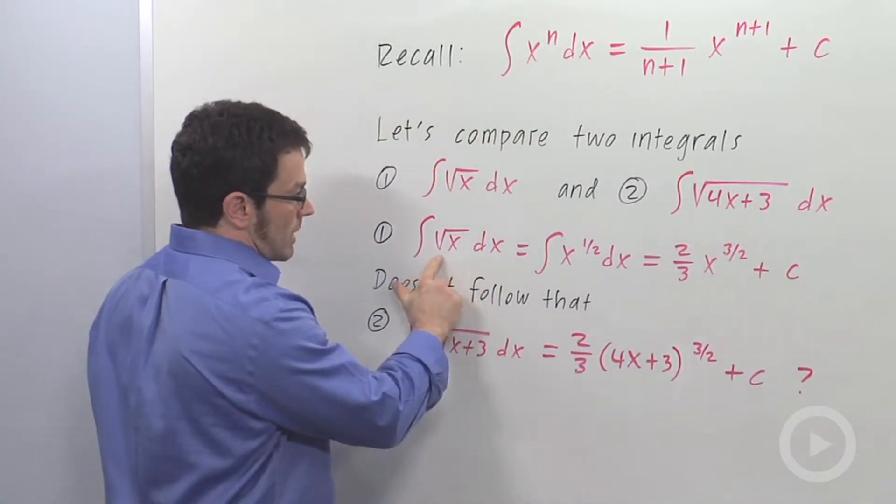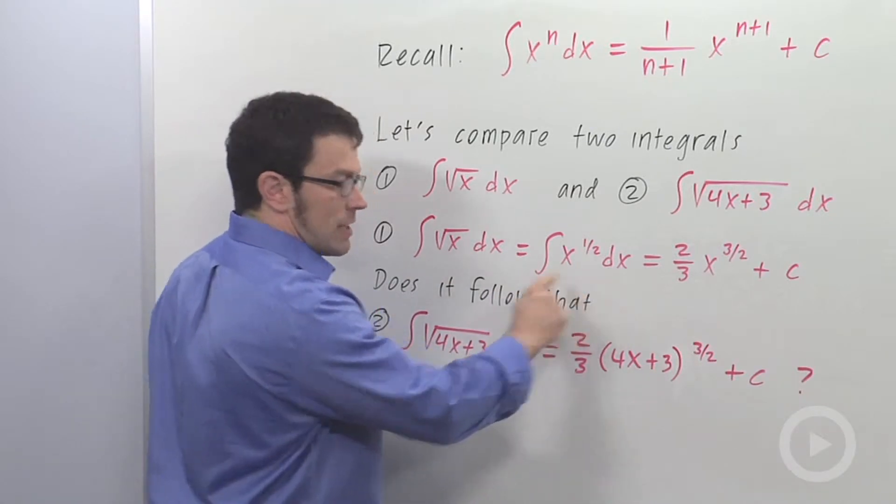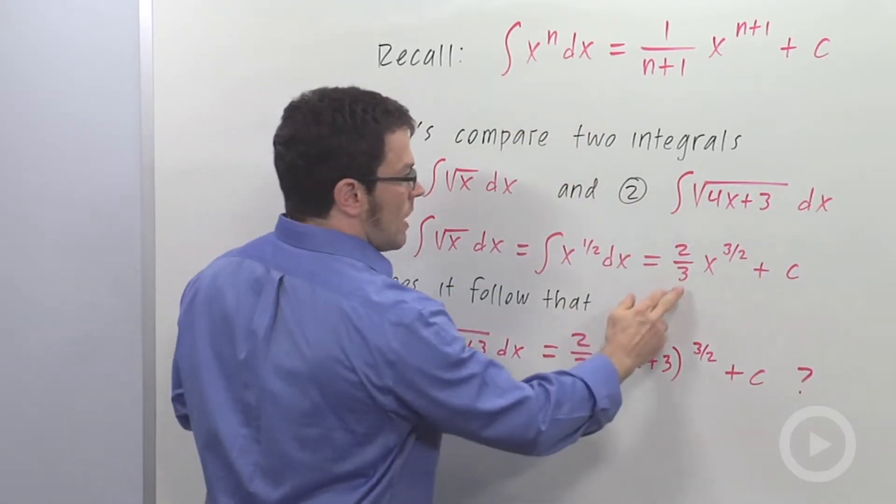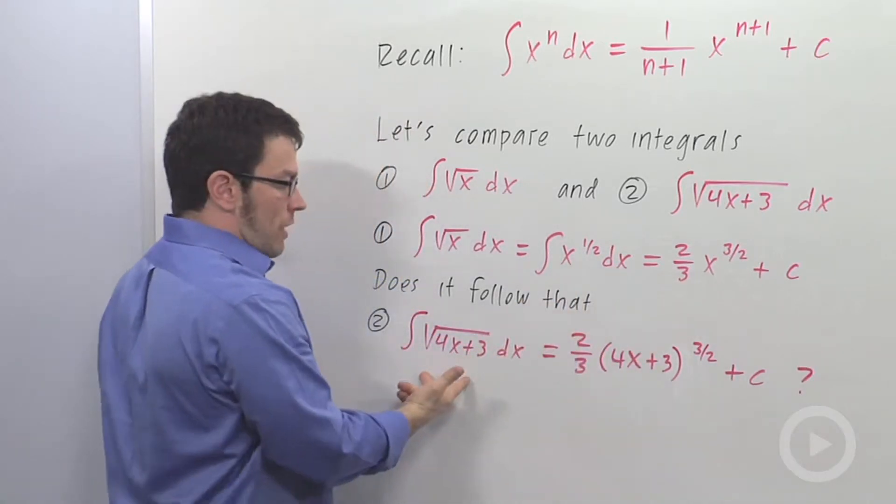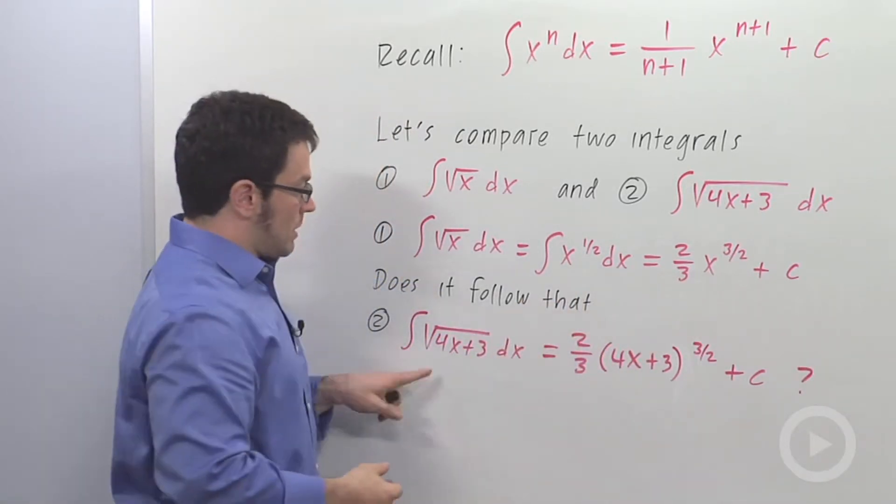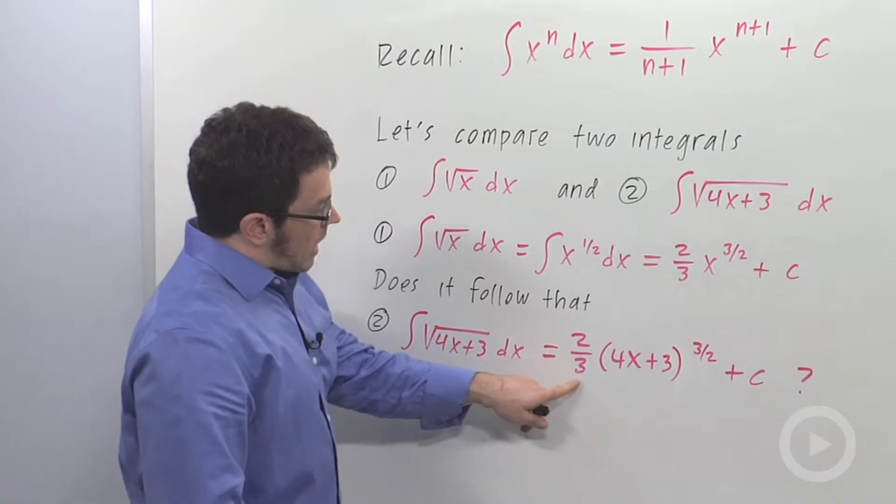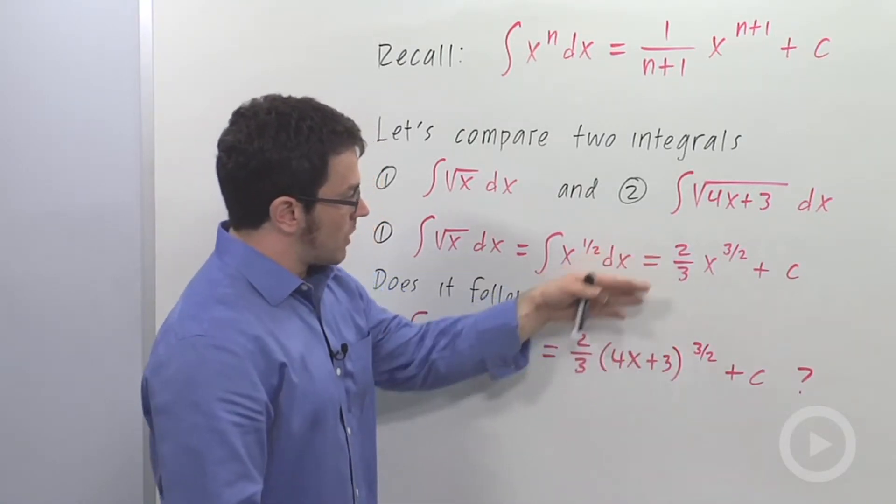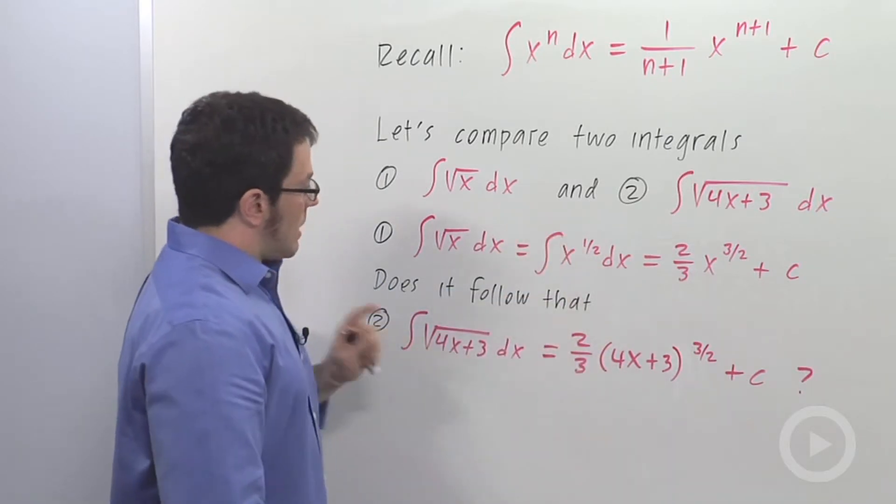When I integrate root x, I can just immediately convert that to a power of x and use the power rule. The question is, can I do that for root 4x plus 3? I would get this answer, right? Just 2 thirds, 4x plus 3 to the 3 halves plus c, just following the exact same pattern.